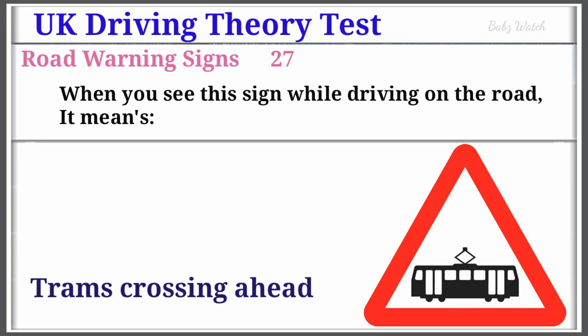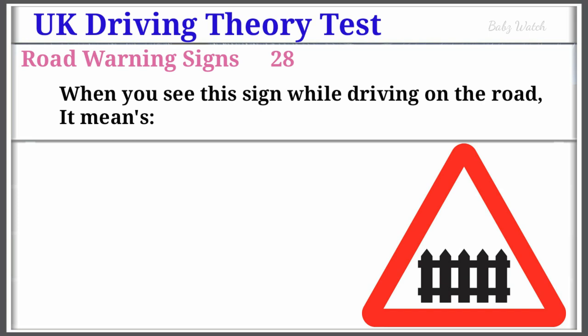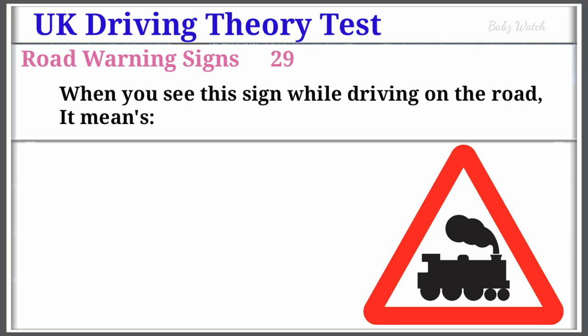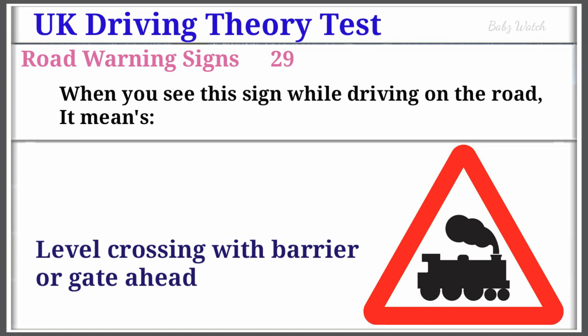UK Driving Theory Test Road Warning Sign Number 28: When you see this sign while driving on the road, it means Level Crossing with Barrier or Gate Ahead. Warning Sign Number 29: When you see this sign while driving on the road, it means Level Crossing with Barrier or Gate Ahead.